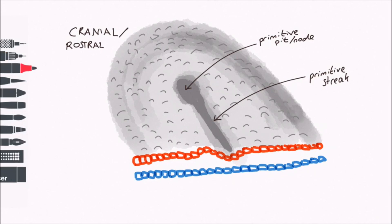Looking back at the transverse section, cells flow into the primitive groove from the epiblast and invade in between the epiblast and the hypoblast to form a third layer, called the mesoderm. Now we have a trilaminar disc. The formation of the trilaminar disc is called gastrulation.